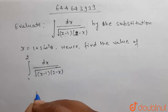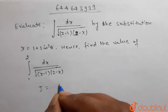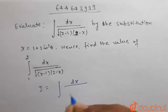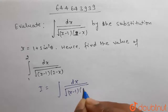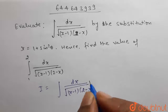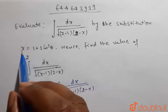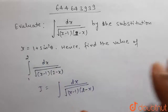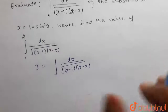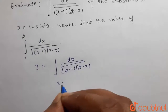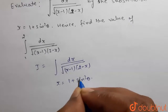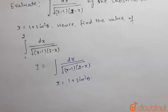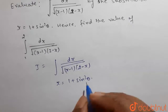So, first we have to solve I equals to integration of dx divided by under root of (x minus 1) into (2 minus x), by substituting x equals to 1 plus sin square theta. So, x is equal to 1 plus sin square theta. We have to substitute x by 1 plus sin square theta.